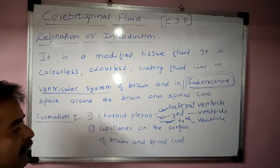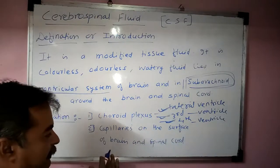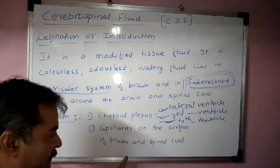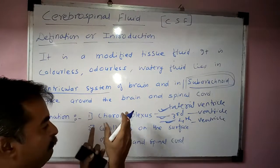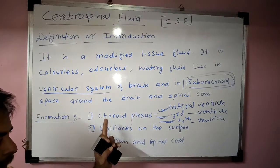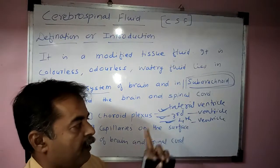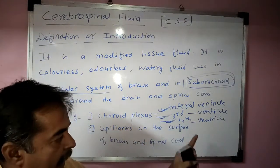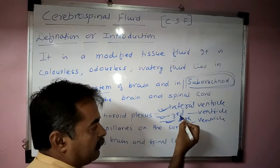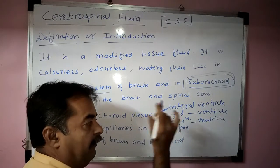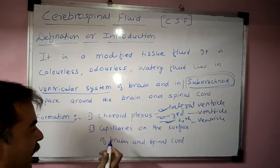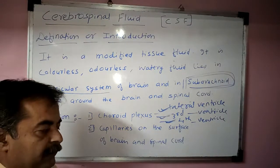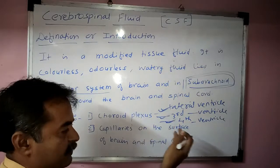Additionally, the capillaries lying around the surface of the brain and spinal cord also contribute to CSF formation. So CSF is majorly formed by the choroid plexus — mainly from the lateral ventricles, with contributions from the third and fourth ventricles and from capillaries on the brain and spinal cord surface.